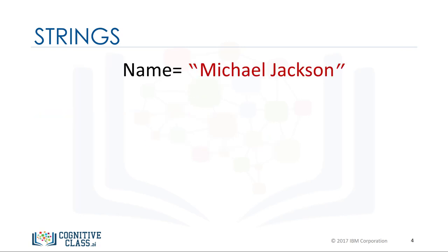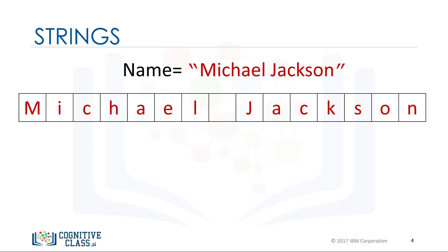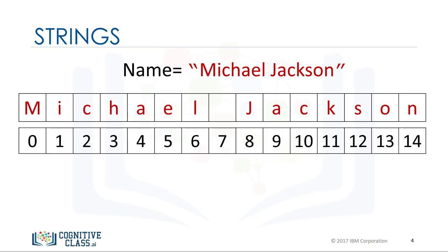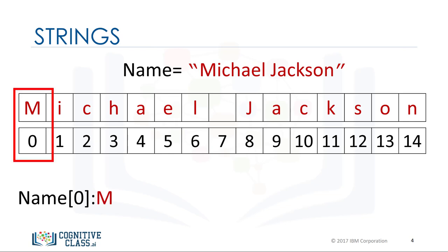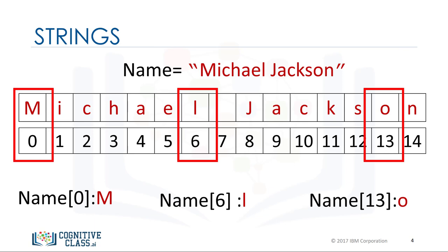We can bind or assign a string to another variable. It is helpful to think of a string as an ordered sequence. Each element in the sequence can be accessed using an index represented by the array of numbers. The first index can be accessed as follows. We can access index 6, and we can also access the 13th index.